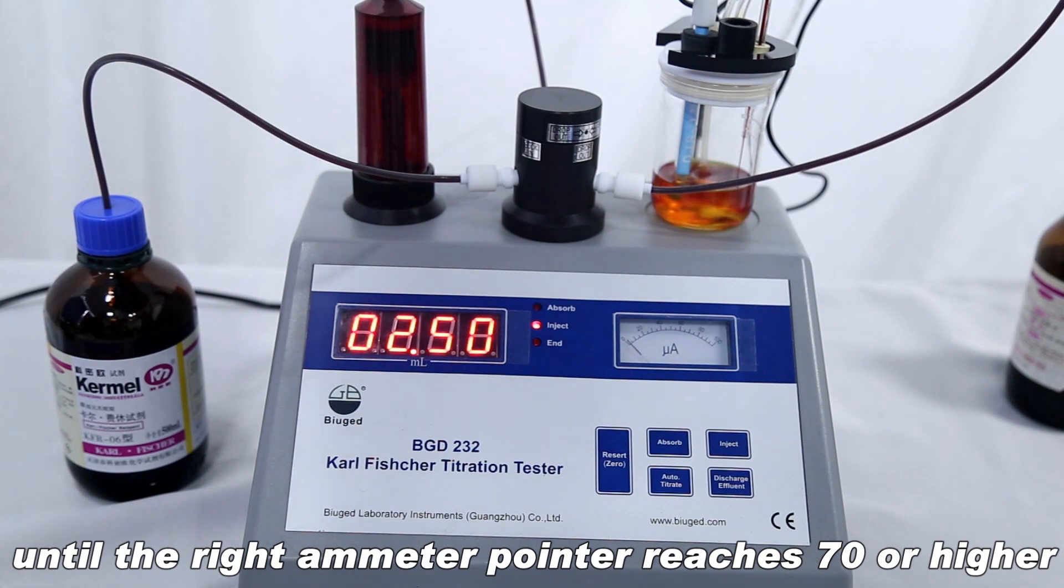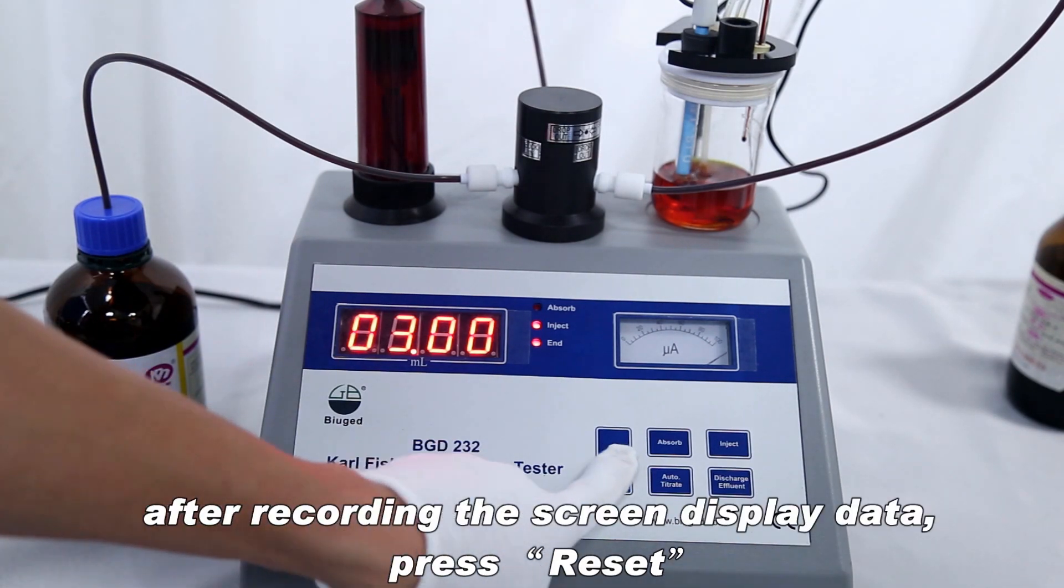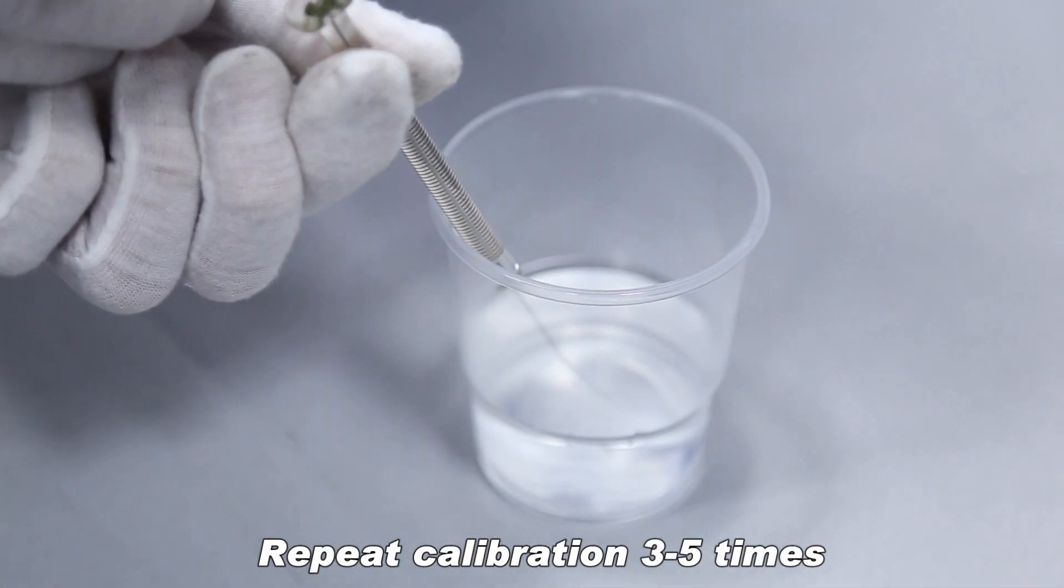Until the right ammeter pointer reaches 70 or higher, the instrument stops titrating and beeps. After recording the screen display data, press reset. Repeat calibration 3-5 times.